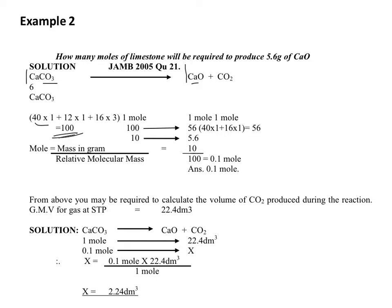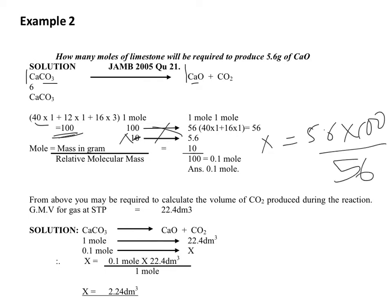5.6g of CaO will be produced by... let's call this x. X is equal to 5.6 times 100, all over 56. 0.1 times 100 is equal to 10. So that means 10 grams of limestone is required to produce 5.6 grams of calcium oxide.